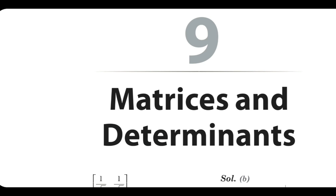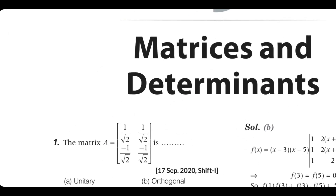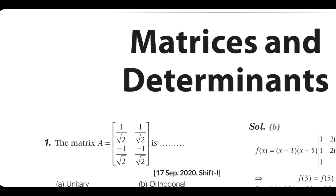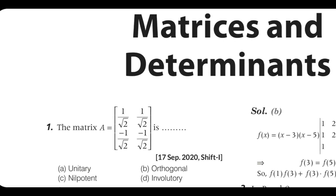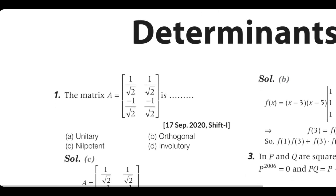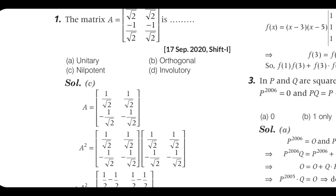So this knowledge — how to apply it, I will explain. First question: the matrix is one by root two, one by root two, minus one by root two, minus one by root two. The answer: is it nilpotent, involutory? Let's read the question.